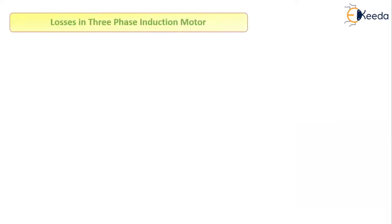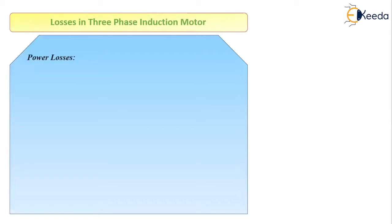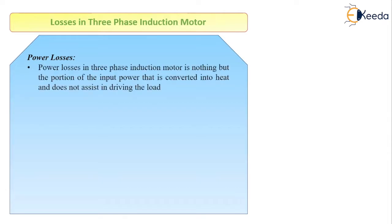Let us first study about the losses in the 3-phase induction motor. The 3-phase induction motor is an electromechanical conversion device. As it is a motor, the input is electrical and the output is mechanical. So the 3-phase induction motor converts electrical energy to mechanical energy. Whenever there is electromechanical conversion from one energy to another, there are always certain losses associated with the system.